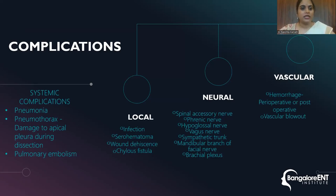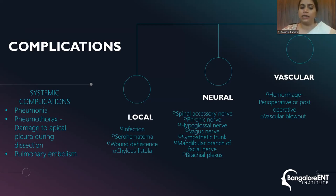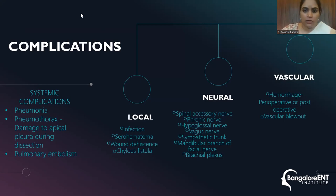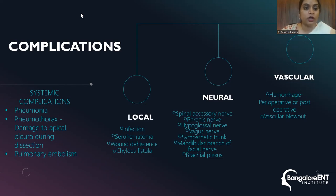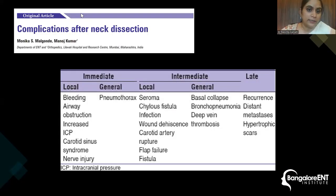Complications of neck dissection: systemic complications include pneumonia, pneumothorax — especially from damage to the apical pleura during dissection — and pulmonary embolism. Local complications include infections, seroma/hematomas, wound dehiscence, and chylous fistulas. Neural complications involve various cranial nerves encountered during dissection. Vascular complications include hemorrhage — perioperative, immediate post-operative, or vascular blowout at any point.